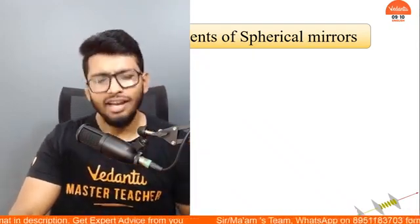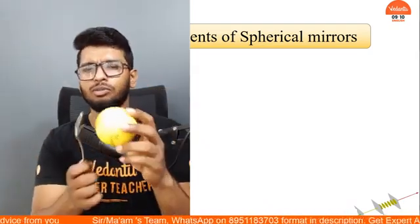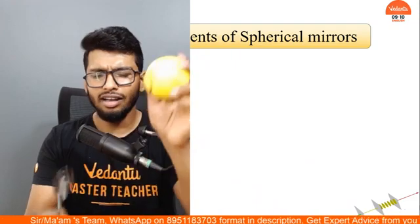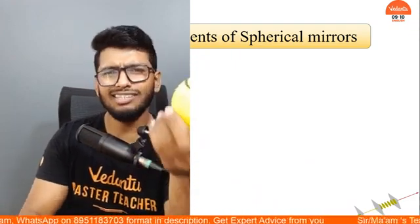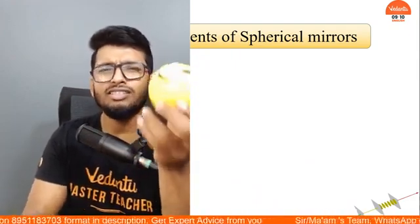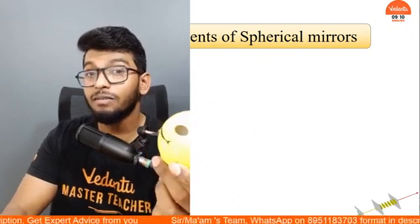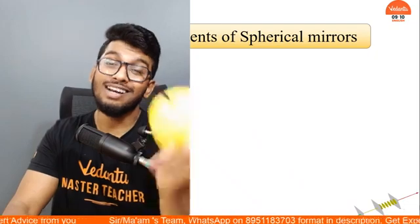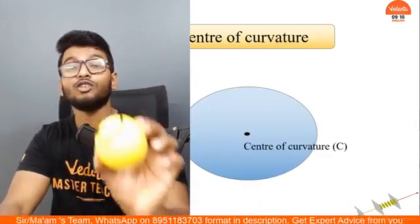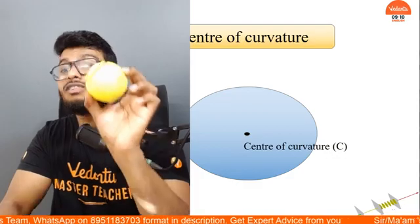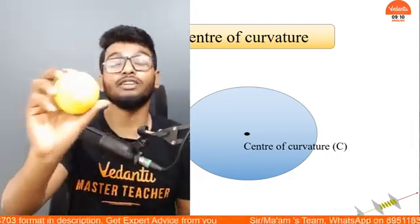Let's talk about the different components of a spherical mirror. Both concave and convex mirrors were initially a part of the sphere. A sphere is nothing but a three-dimensional circle. So just as a circle has a center, the sphere will also have a center. The center of the sphere is called the center of curvature — the midpoint of the sphere.